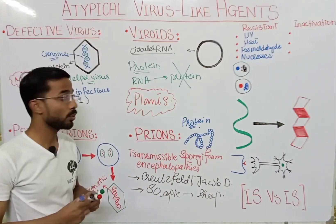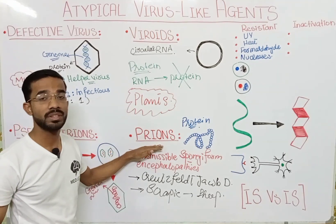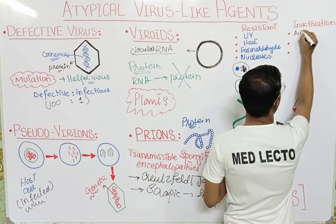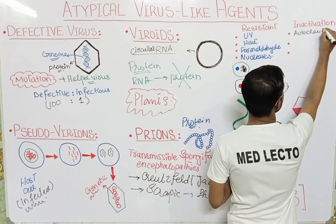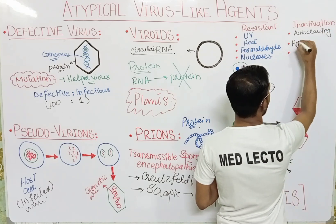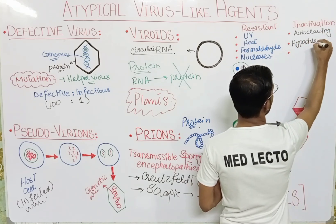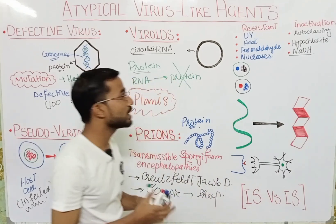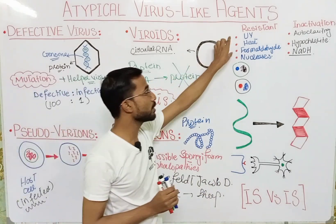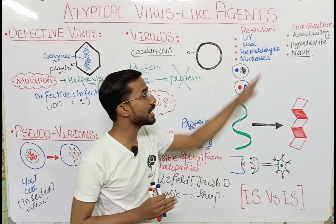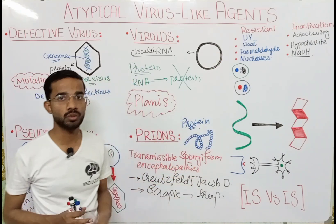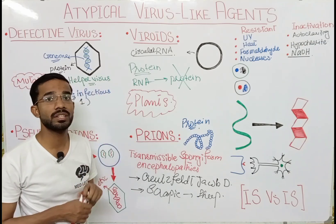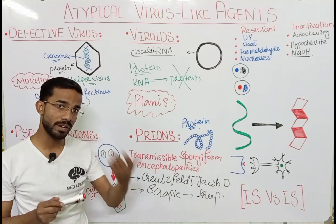But we can inactivate prions with the help of the autoclave. We can also inactivate them with the help of hypochlorite or sodium hydroxide. So prions are resistant to UV light, heat, and formaldehyde, but are inactivated by autoclave, hypochlorite, and sodium hydroxide. Prions are actually filamentous in shape.